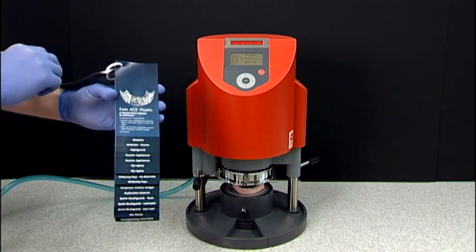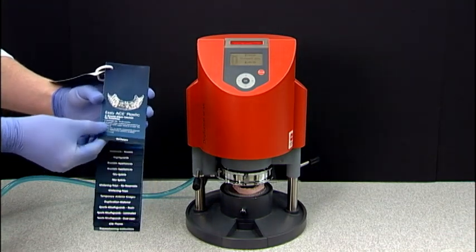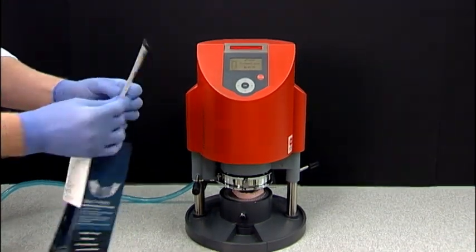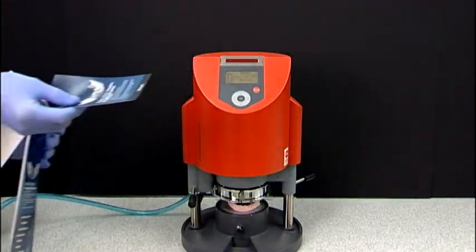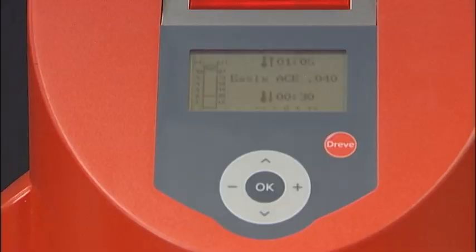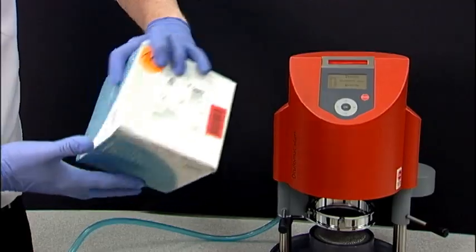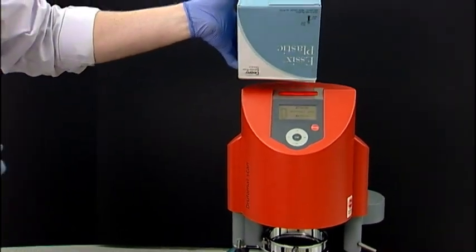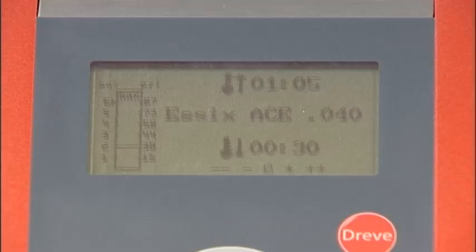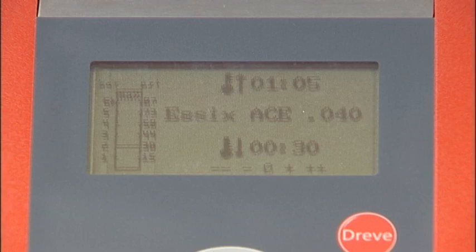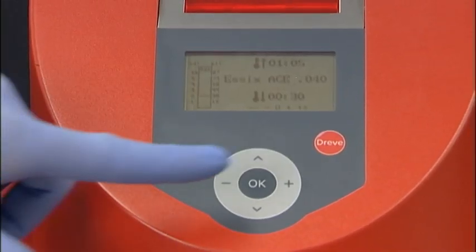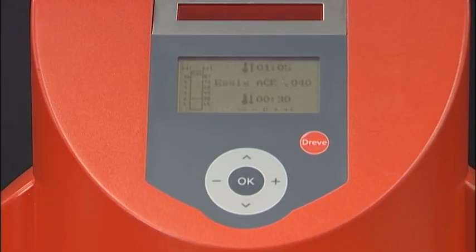Place the barcode over the scanning element. If your Essex Plastic Guide is not available, you can use the barcode from the box of Essex Ace Plastic. You will hear a short beep indicating the Drufomat scan is now preset with the heating and cooling times for Essex Ace Plastic and the thickness you have chosen. You are now ready to press the OK button on the front of the Drufomat.